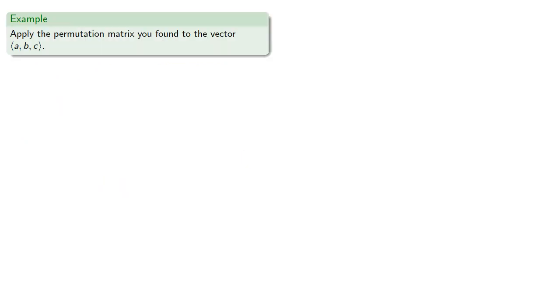So we might take our permutation matrix and apply it to the vector (a, b, c). In order to do that, we'll need to rewrite the vector as a column vector and then multiply.